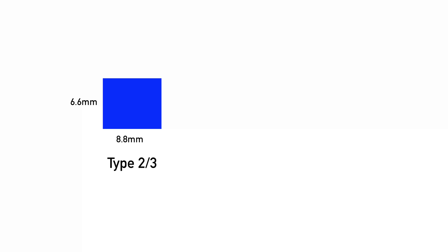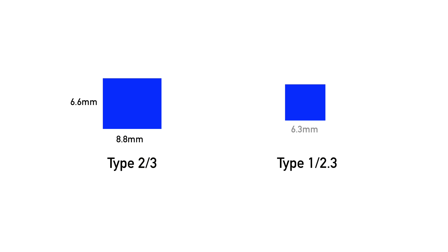Compare that against the Type 1/2.3 sensor — that gives you a 6.3mm by 4.7mm sensor, and again that gives you an idea of the relative size. When we compare multiple sensors against each other — say, multiple sizes in a smartphone or different products — we'll also do the math for you. You'll see the square surface area in millimeters of each of these sensors as well, to further clarify their relative sizes to each other.